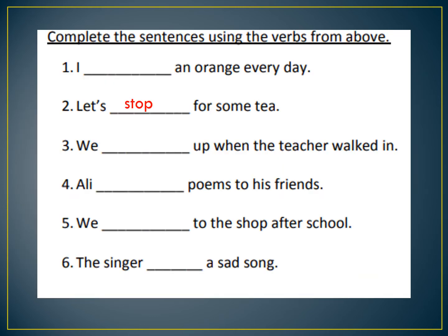Complete the sentences using the verbs from above. Number one: I eat an orange every day. Number two: let's stop for some tea. Three: we stood up when the teacher walked in. Four: Ali writes poems to his friends. Five: we walk to the shop after school. Six: the singer sang a sad song. In these sentences, stood and stop are verbs because of how they are arranged, but they could be arranged in a way that makes them a noun — just keep that in mind.